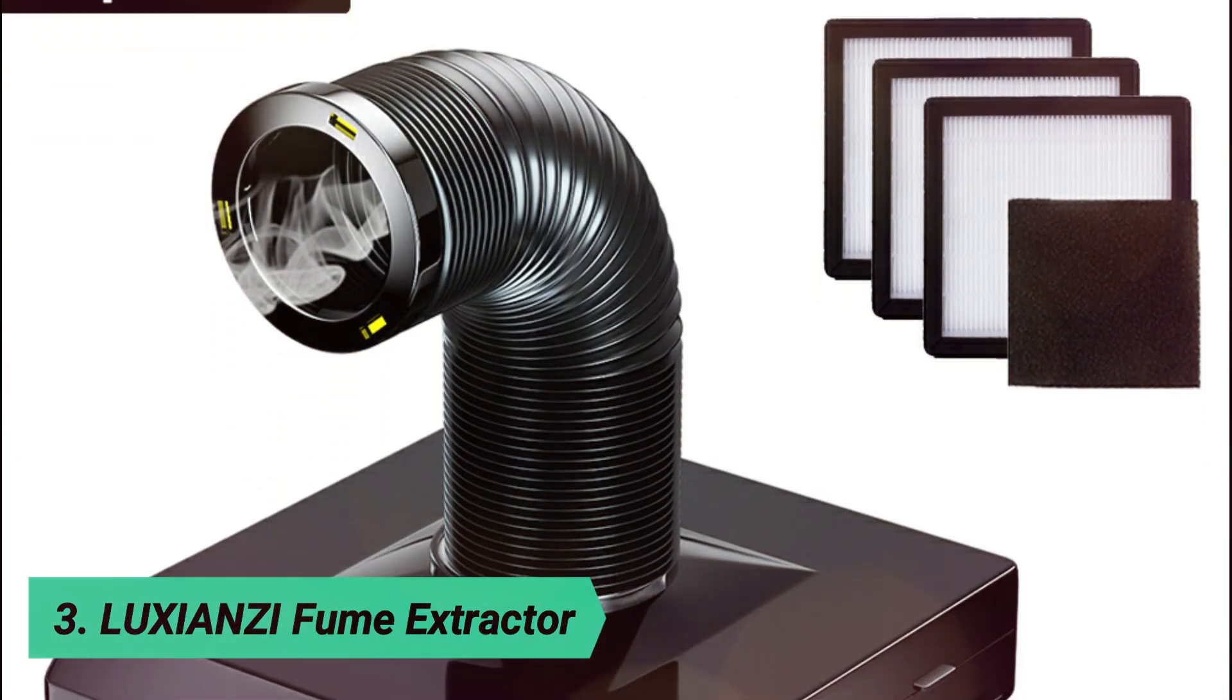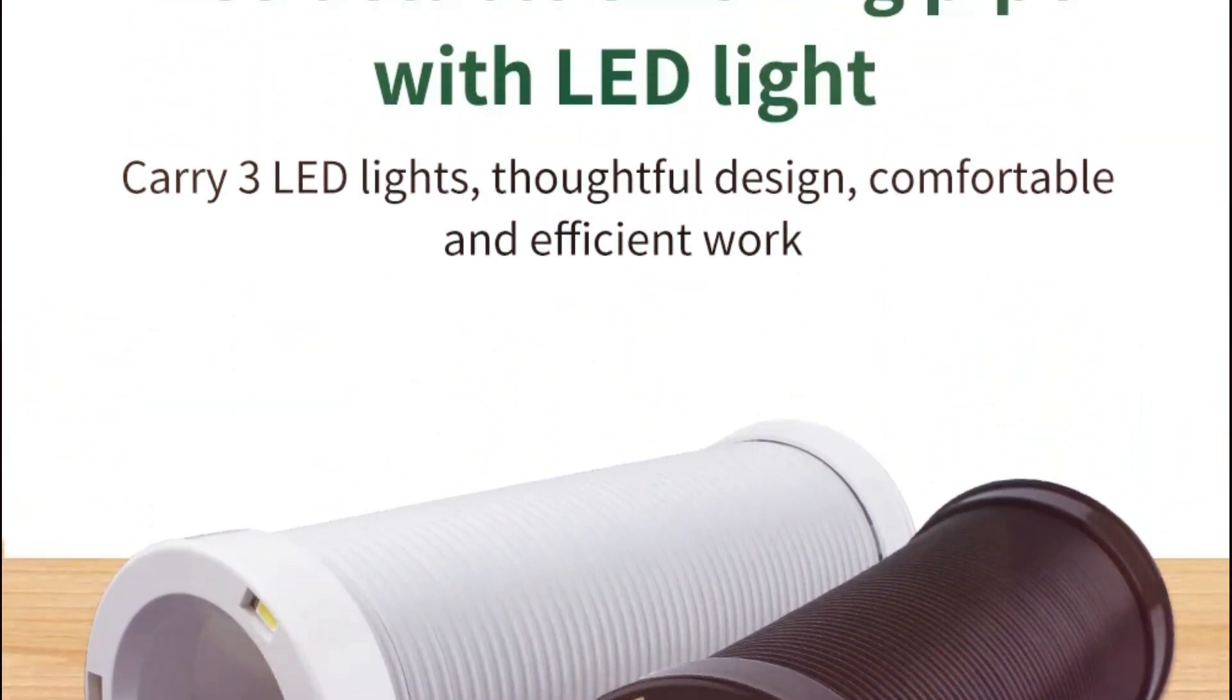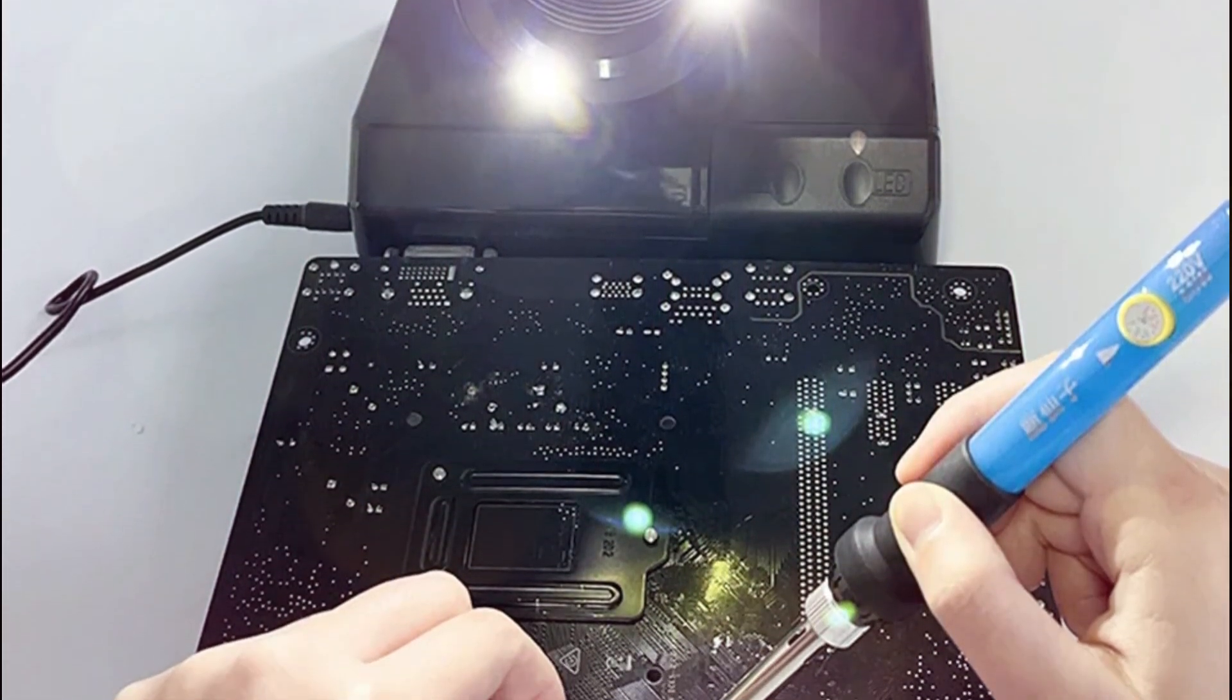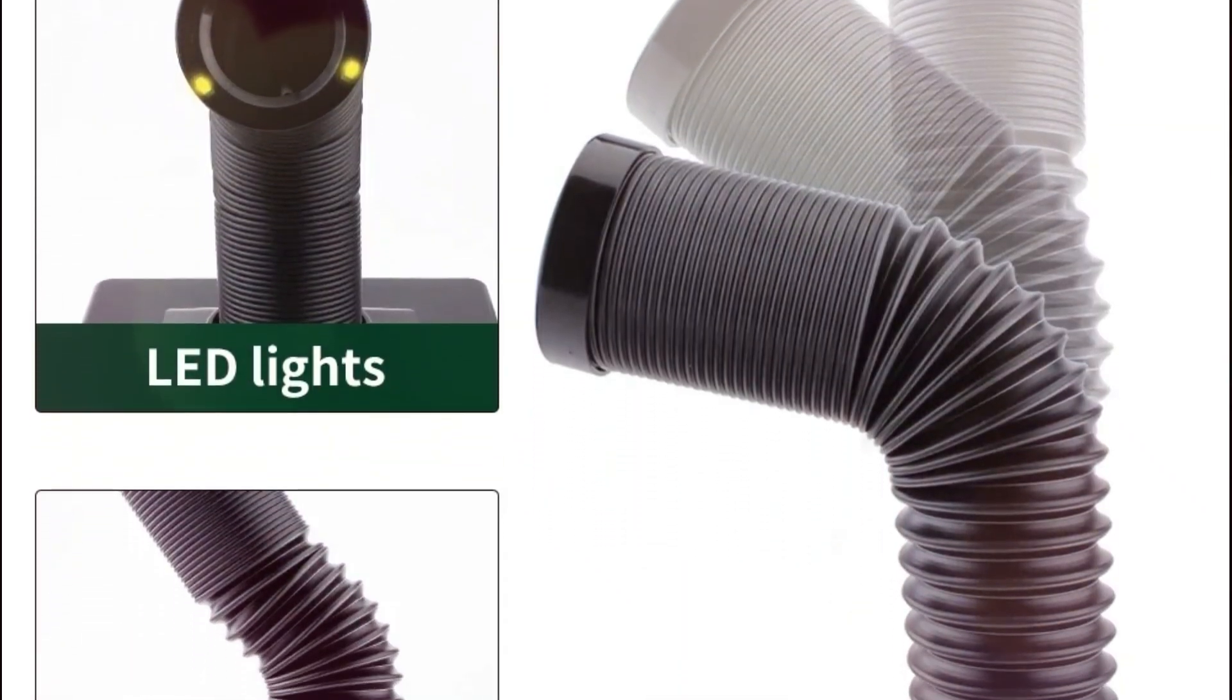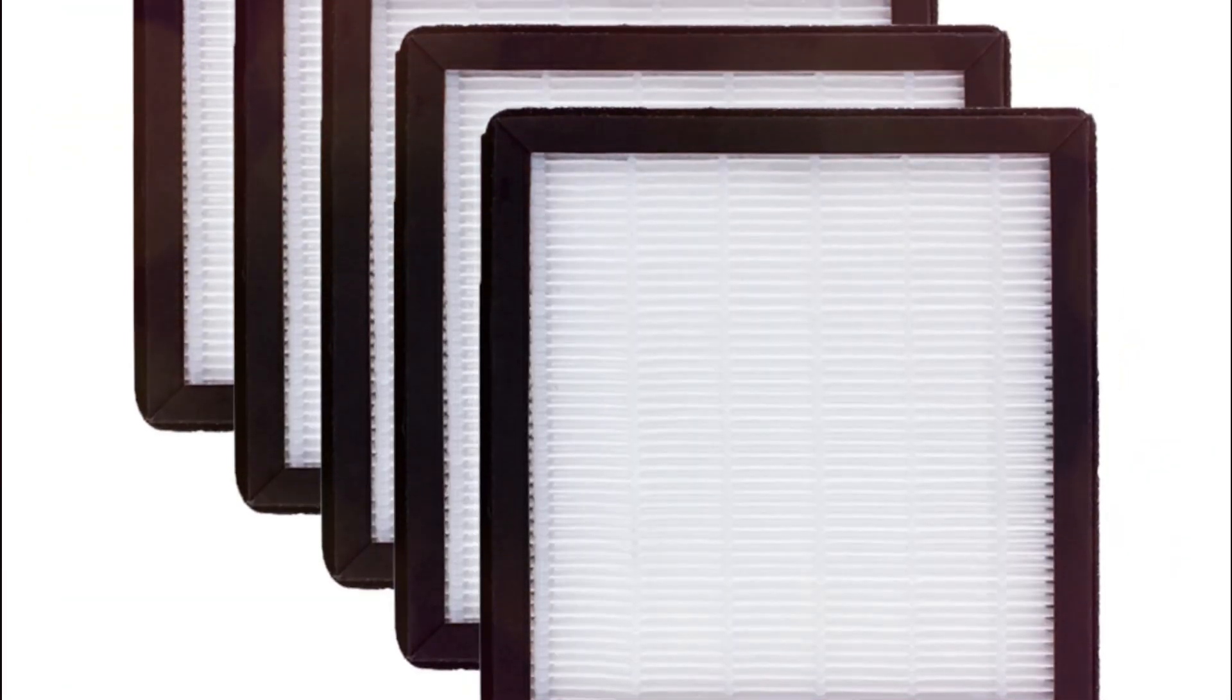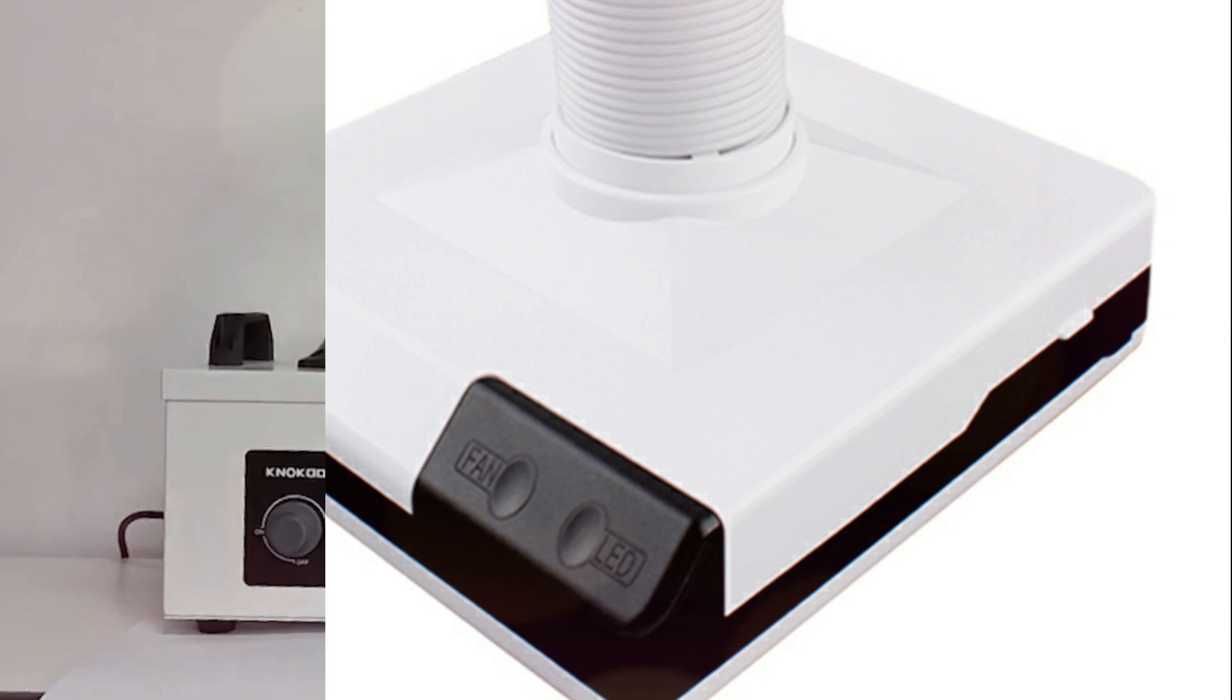At number 3, Luxion Z Fume Extractor. This fume extractor delivers strong smoke absorption, making it ideal for soldering applications. Its high-powered suction efficiently removes harmful fumes, keeping your workspace clean and safe. Equipped with an activated carbon sponge and HEPA-dense mesh filter, it effectively captures toxic particles and lead fumes, ensuring better air quality. With a 360 adjustable welding smoker, it allows for optimal smoke capture from any angle, providing flexibility for different tasks. Designed with anti-static protection, this fume extractor prevents electrostatic smoke buildup, enhancing both safety and efficiency in your work environment.